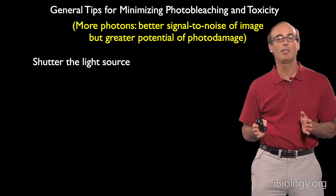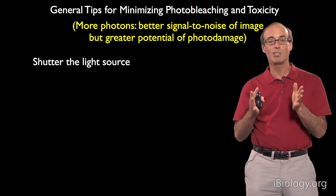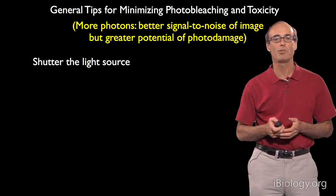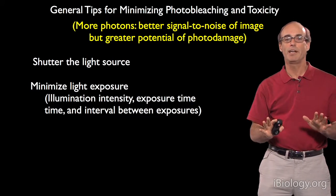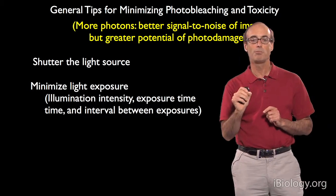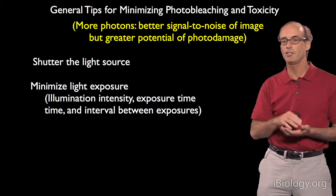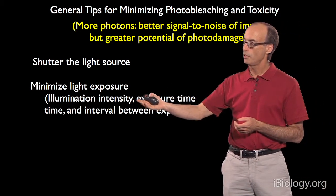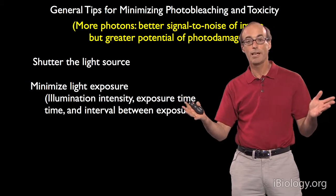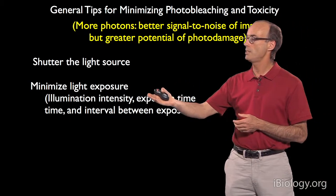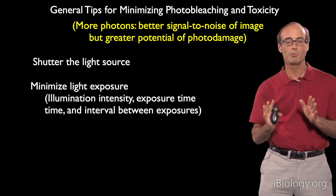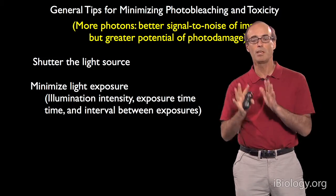There are several things we can do. First, shutter the light source — during times when you're not actively collecting an image, the light source should be turned off. There are many ways to shutter and control the light source with a computer. Second, minimize light exposure by carefully adjusting both illumination intensity and exposure time. Together, these determine your signal. One has to balance getting a good image while not over-illuminating and potentially causing photo damage.